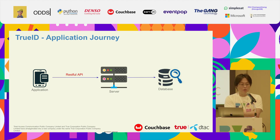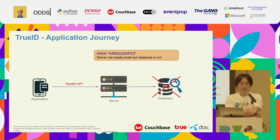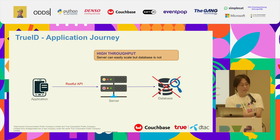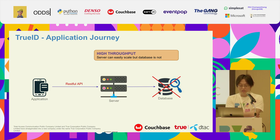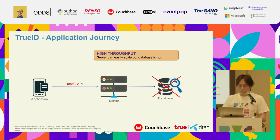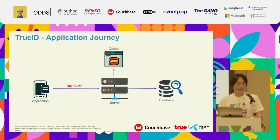Let me talk about our journey with TrueID. Five years ago we started with only a few thousand concurrent users — very small. We had a simple application calling a RESTful API to the server connected to a database. The problem occurred because we grew too fast and never expected it. With high throughput, the server could scale easily since we use microservices on a Kubernetes cluster, but the database was not so easy to scale and it would go down.